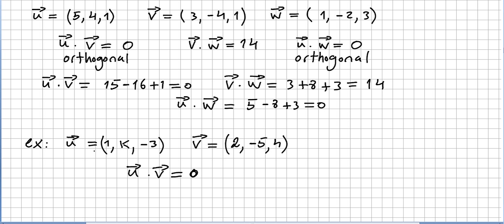A quick example: let's say we have vector u equals (1, k, -3) and vector v equals (2, -5, 4). For what values of k are vector u and v orthogonal? Just do the dot product and see what k has to be in order for these two vectors to be orthogonal.